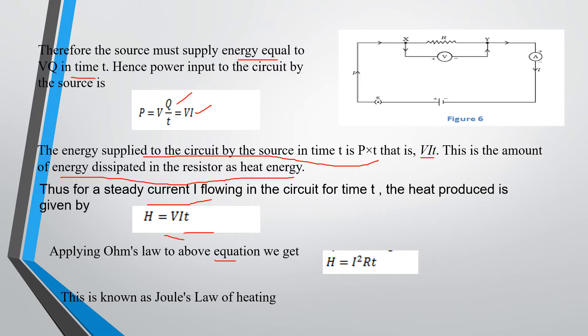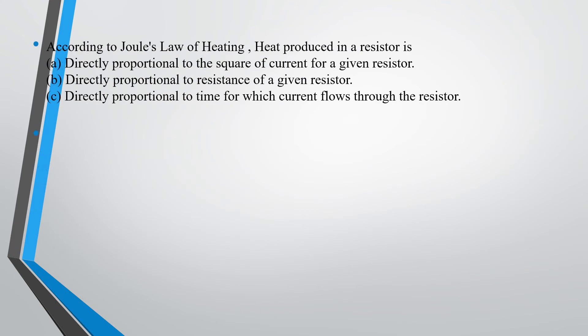Applying Ohm's law to the above equation, you will get H equals I squared R times T. This is what we call Joule's law of heating. According to Joule's law of heating, heat produced in a resistor is directly proportional to the square of the current, directly proportional to the resistance of the resistor, and directly proportional to the time for which current flows through the resistor.